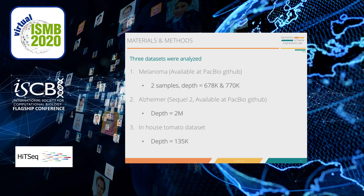Three separate datasets were run through SQANTI for use in our adapted function. The datasets used were a melanoma dataset available at the PacBio GitHub, which has two samples; an Alzheimer dataset also available at the PacBio GitHub and sequenced with SQL2, showing a higher sequencing depth; as well as an in-house tomato dataset.